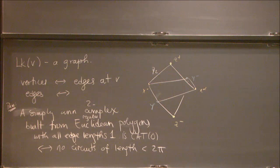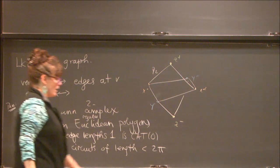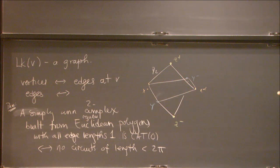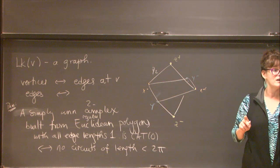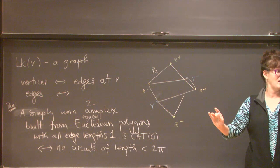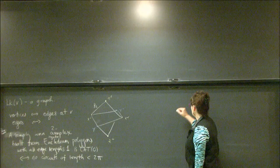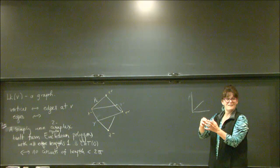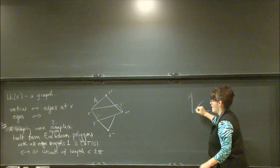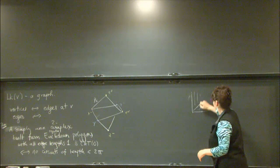In the two-dimensional case it's quite simple to state: a simply connected two-complex built from regular Euclidean polygons — all edge lengths the same — is CAT(0) if and only if, when I go to the link graph (a metric graph with angle labels on the edges), there are no circuits of length less than 2π. When all angles are π/2, this is 100% combinatorial: I just can't have any circuits of length three or two, because a circuit of length four already reaches 2π.